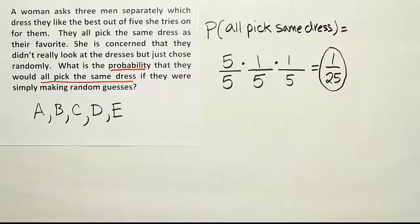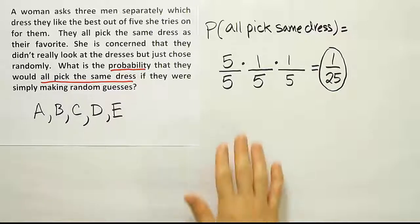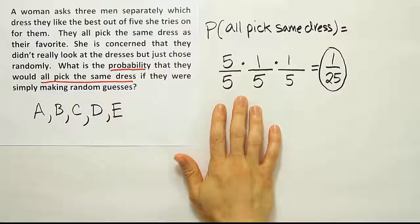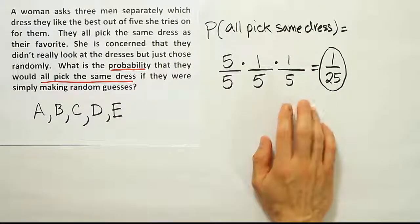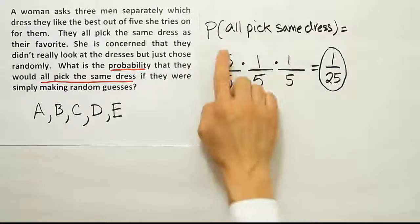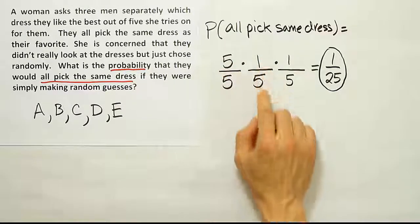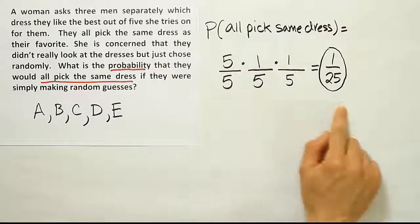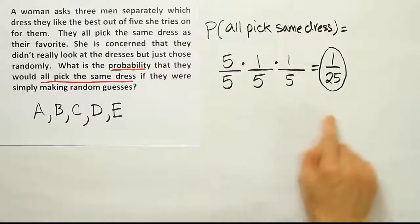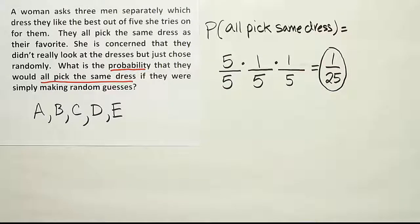It's a tricky problem. Most people get it wrong the first time and make the mistake of one fifth times one fifth times one fifth. This is why we do problems like this in class and in the homework — so we gain experience and are less likely to commit that mistake in the future.